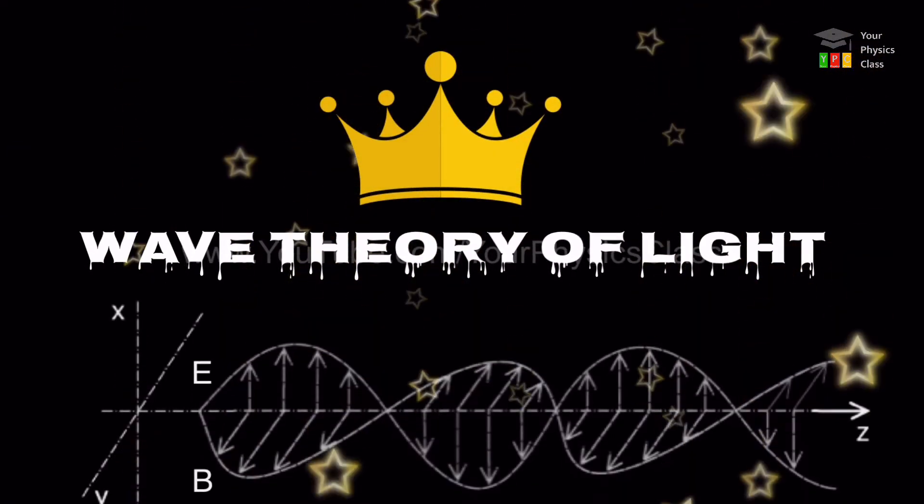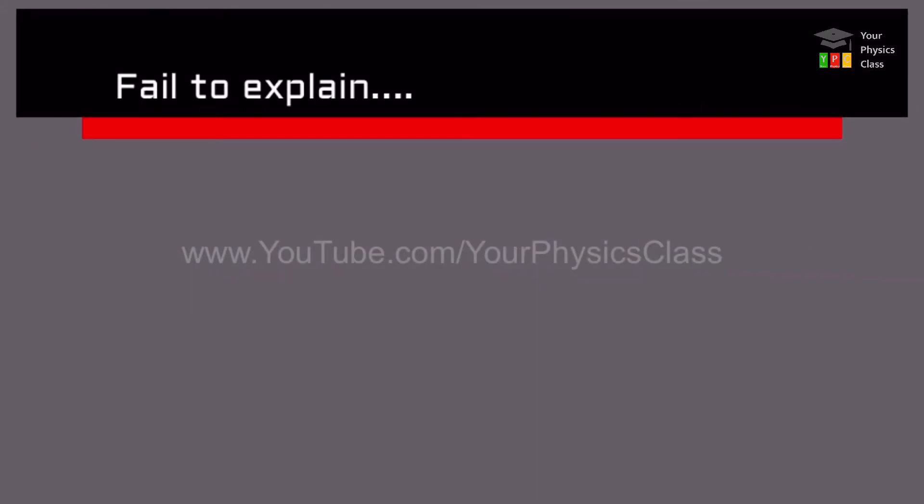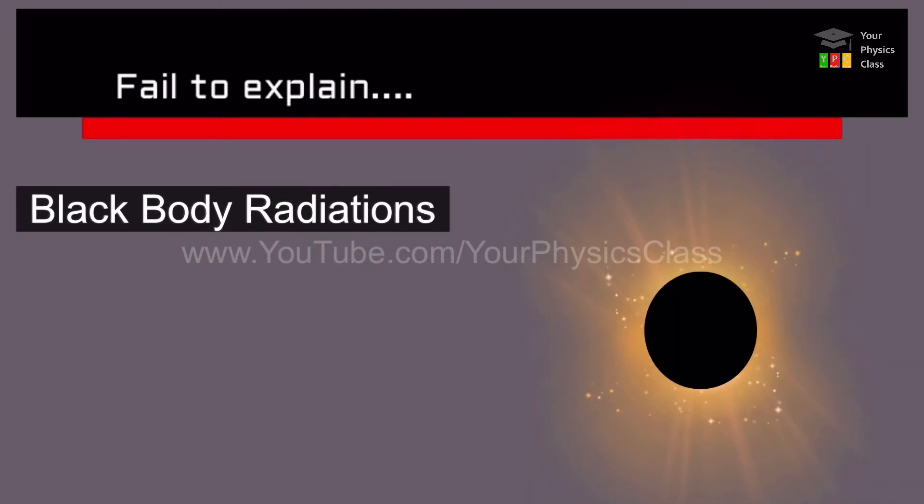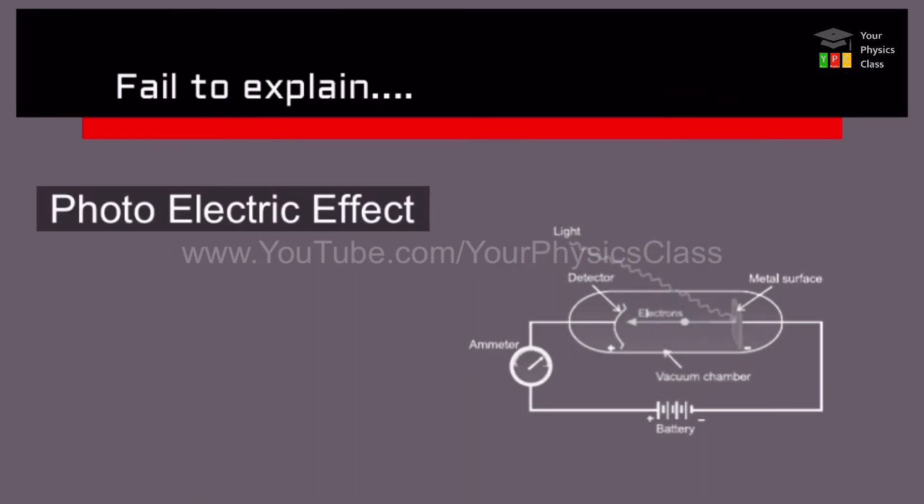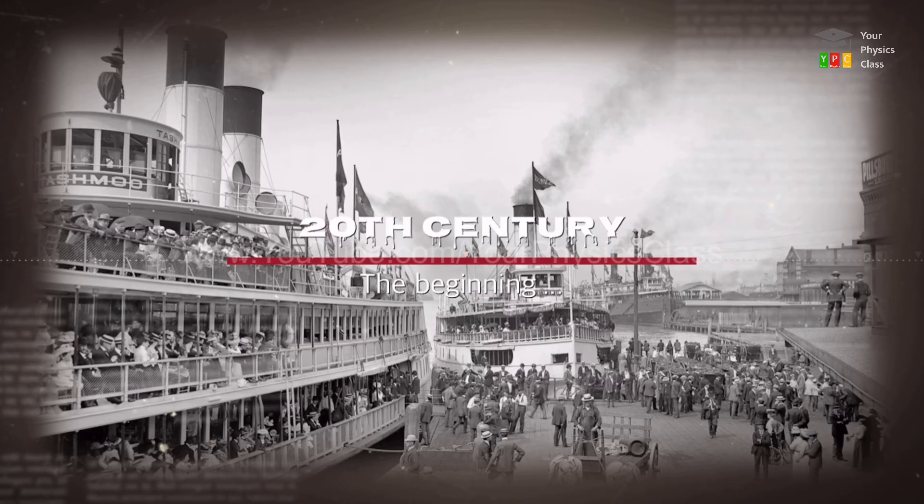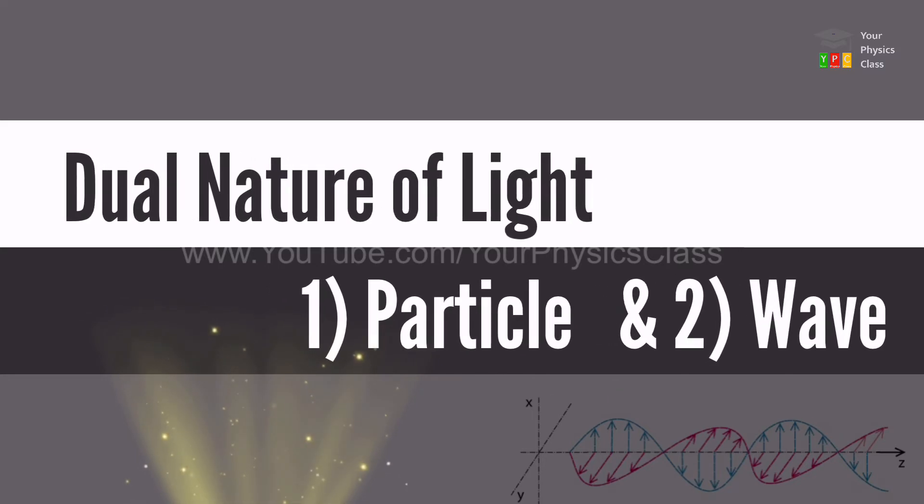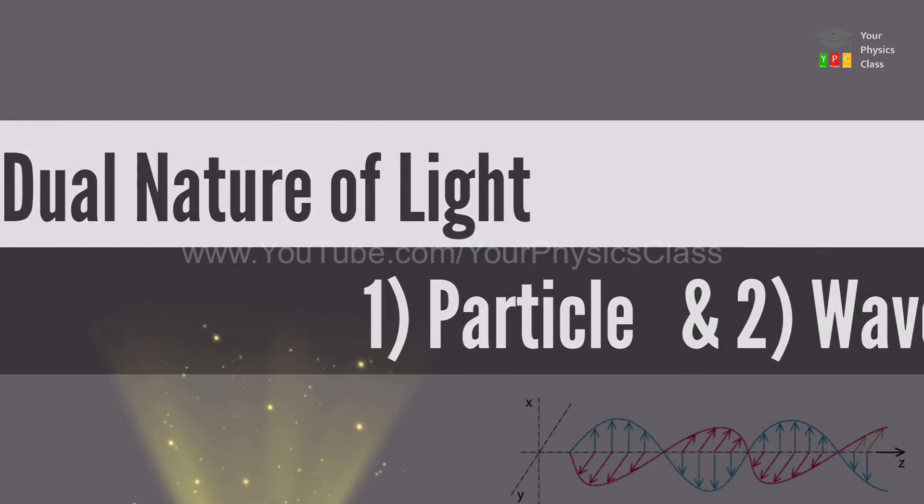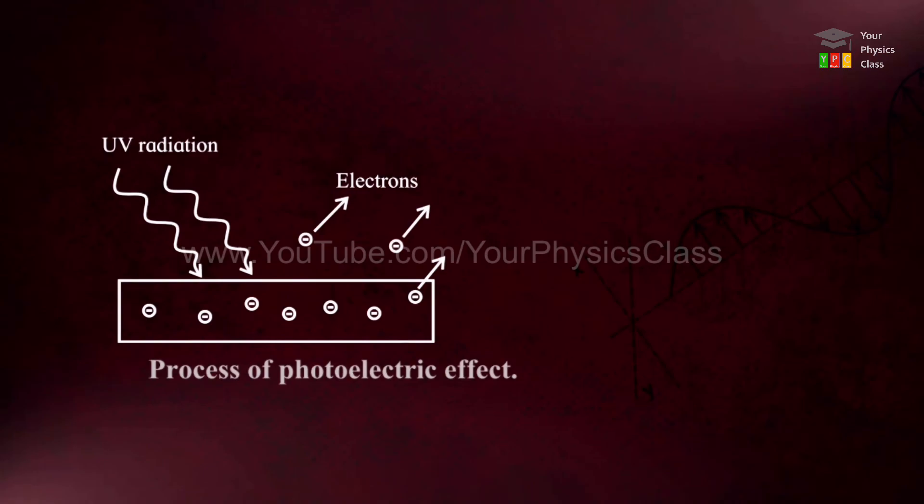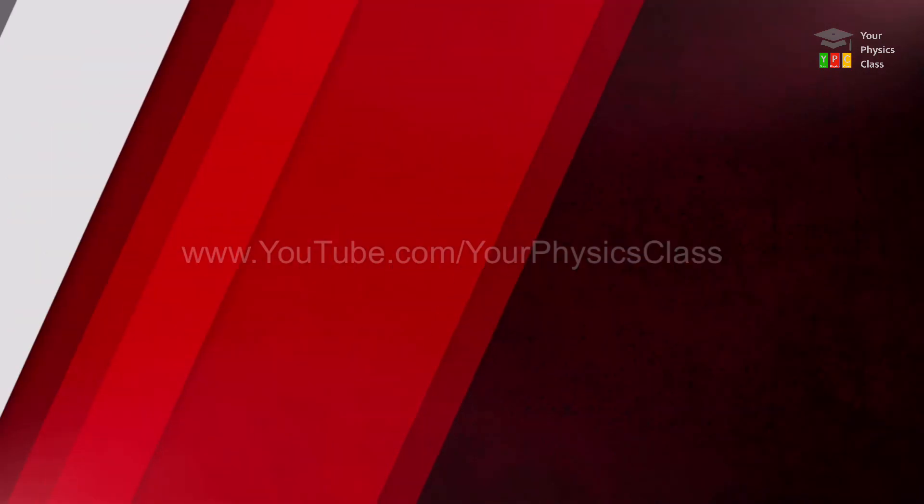Despite overwhelming success of wave theory of light, the theory could not explain some light phenomena such as Compton effect, black body radiations, photoelectric effect, etc. Therefore, in the early 20th century, it was accepted that light has dual nature. It can exhibit particle nature as well as wave nature under different situations. Particles of light are called photons. We will learn more about this photon and dual nature in coming videos.